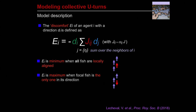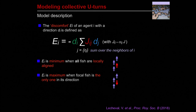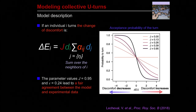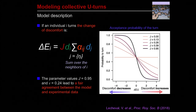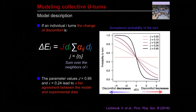When J is in front of I, the coupling alpha_IJ equals one plus epsilon; when J is behind, it equals one minus epsilon. Epsilon is a coefficient of asymmetry kept constant for all group sizes. At a given moment, we compute the propensity of an individual to make a U-turn, which depends on its current direction, the direction of its neighbors, and the strength of interaction. This propensity reflects the level of discomfort of the individual: discomfort is minimum when all neighbors are locally aligned and maximum when the fish is in the opposite direction of all its neighbors. The parameter J controls the non-linearity of the acceptance probability for the turn.